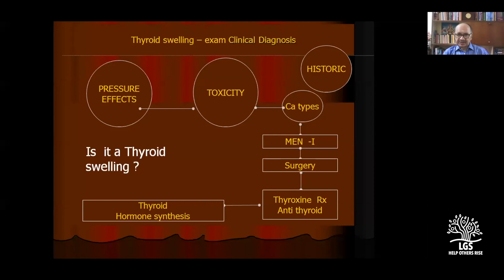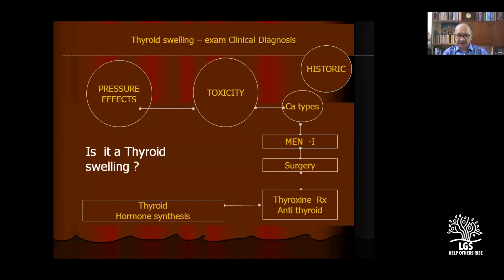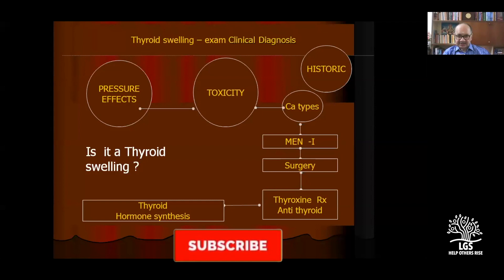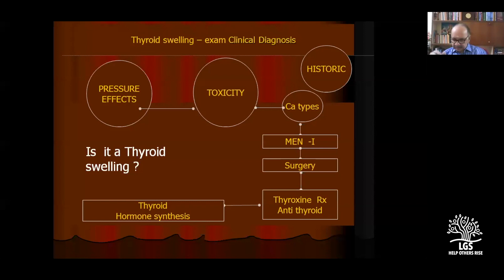History: who is the father of thyroid diseases? Emil Theodore Kocher. We will have pictures of him here. Malignancy types you should know, and MEN — multiple endocrine neoplasia — will be asked in the exam. There are T-cells asked in the evening orals because examiners have free time then. Also, replacement of thyroxine, anti-thyroid drugs, and thyroid hormone synthesis — this is what you should get ready.